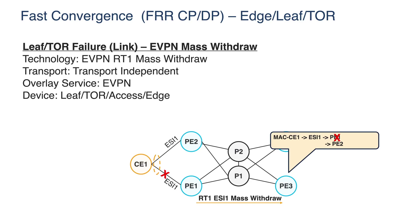This is very important because it theoretically doesn't matter how many MAC addresses I have behind PE1 — I will always do a very quick switchover. At the same time, there is always a delay when the BGP control plane advertises this information to the remote node, so we cannot always guarantee sub-second convergence time. We are taking another approach, very familiar in the L3VPN world with the BGP PIC Edge solution.